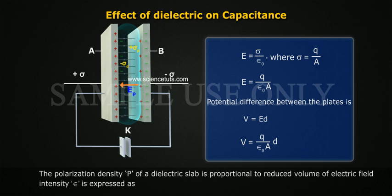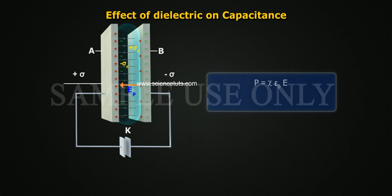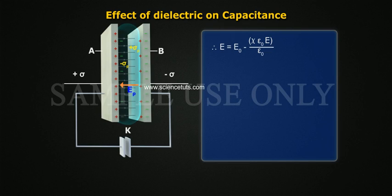The polarization density P of a dielectric slab is proportional to reduced volume of electric field intensity E, expressed as P equals psi epsilon naught E, where psi is electric susceptibility. Therefore, E equals E naught minus psi epsilon naught E by epsilon naught, which equals E naught minus psi E.